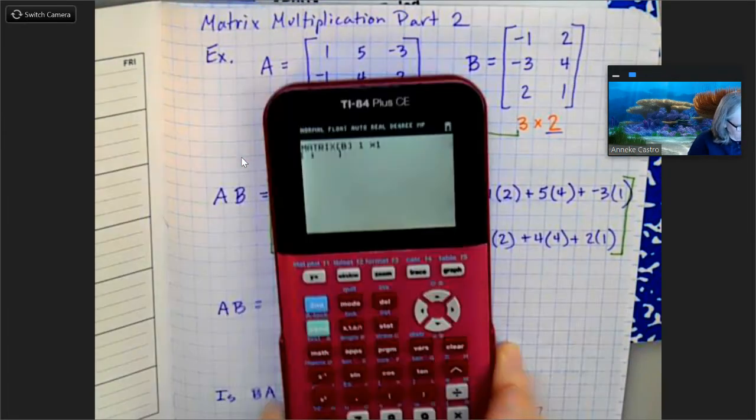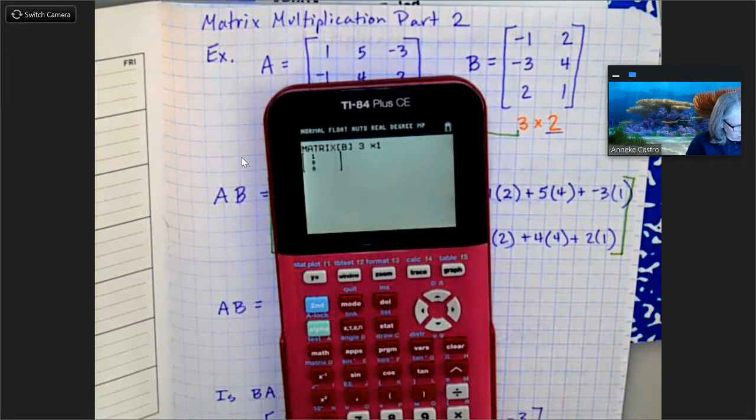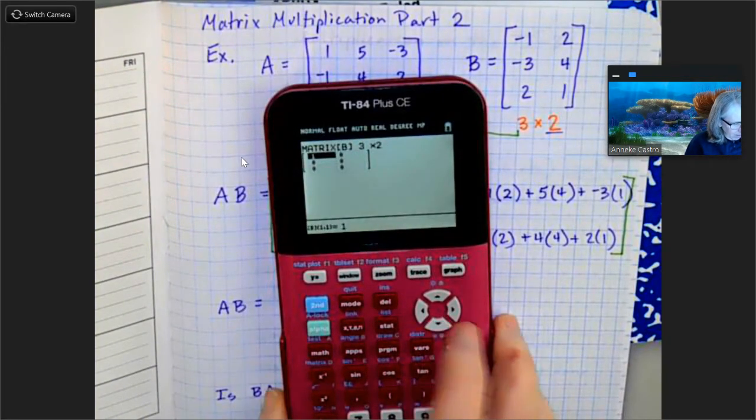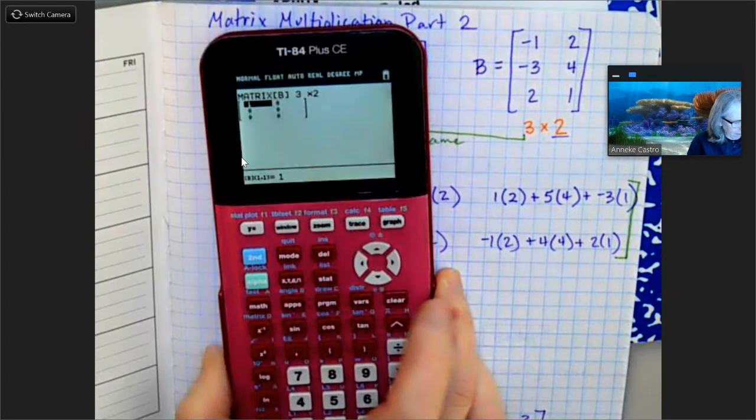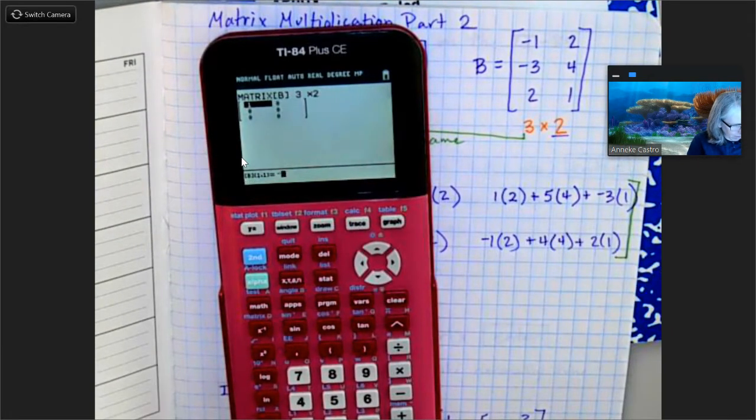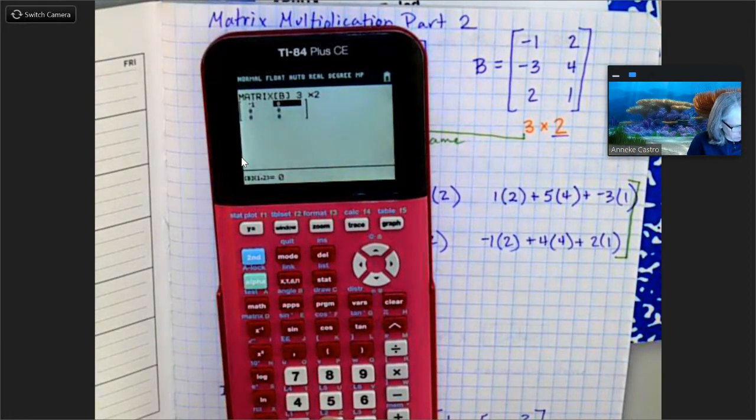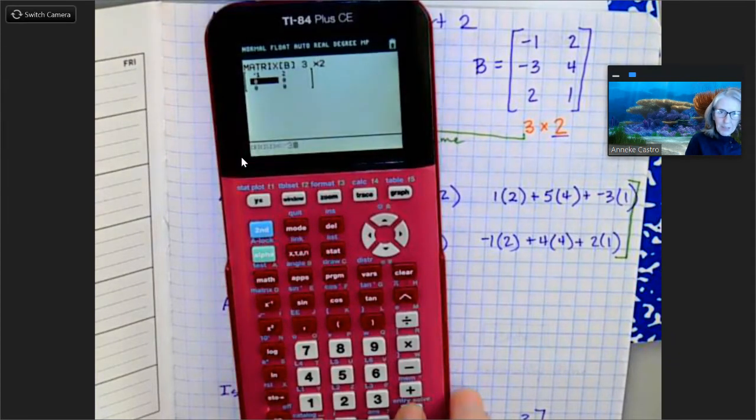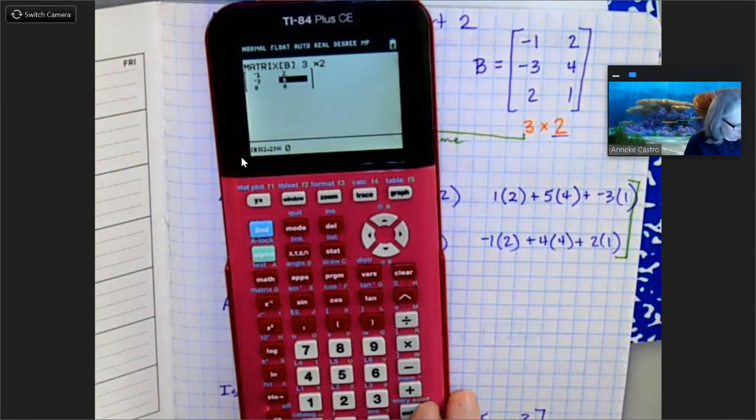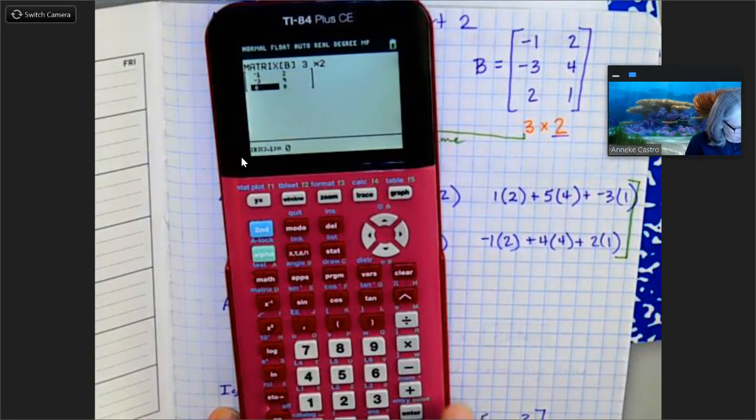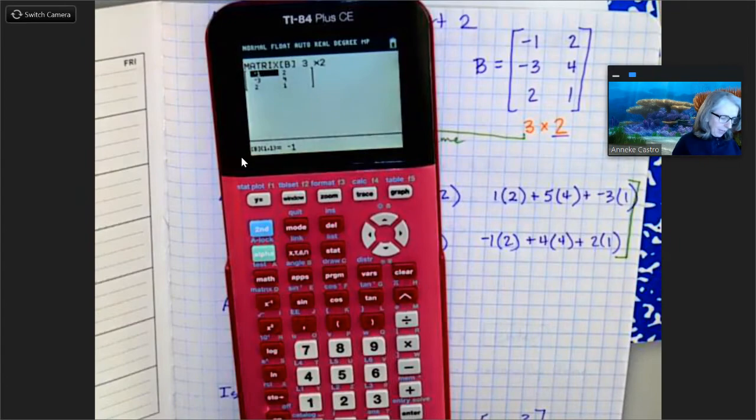So this one is going to be for matrix B. It's going to be a 3 by 2, so 3 by 2. There it gives me my matrix. Now I'm going to enter in my values. So negative 1, 2, negative 3. This time I'm just hitting the enter button in between each one. This is much better than what I did previously. 2 and 1. There, so now I have both matrices in.